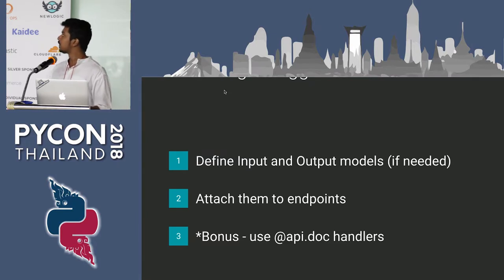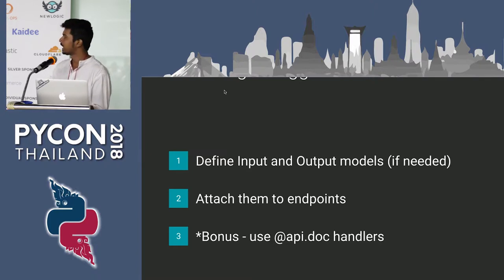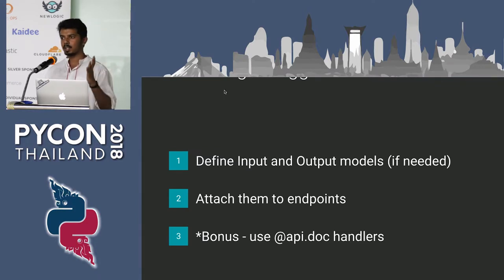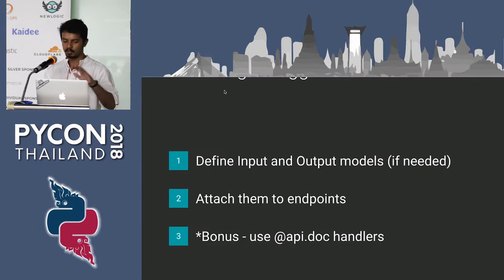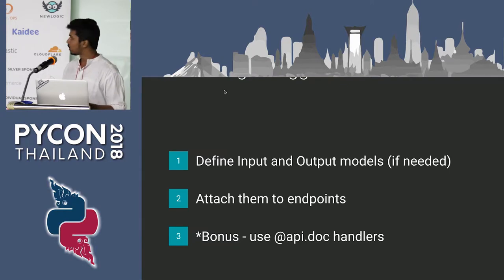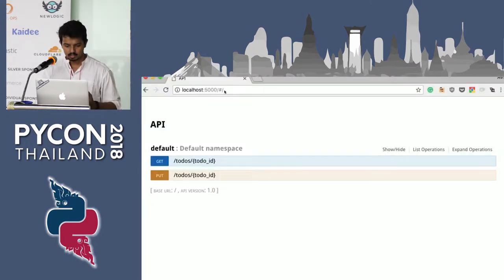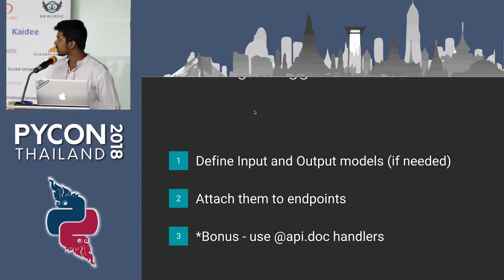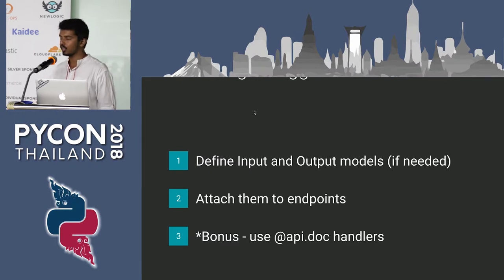The first step is to explicitly define input and output models — output models are optional but recommended. By models I mean: if we have a REST API endpoint, what type of data will go into that endpoint. You define them in the code and then attach them to endpoints. Once attached, they will be automatically documented and available on the webpage. There is an extra step using api.doc handlers to get extra information about the API.